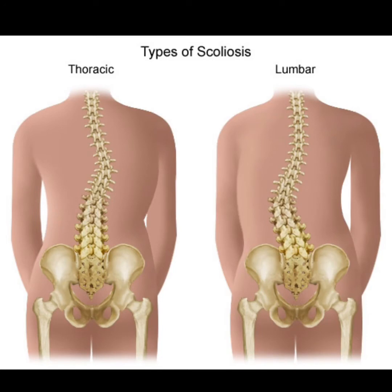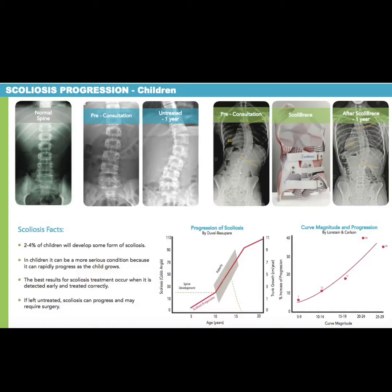Let's start with what scoliosis is. Scoliosis is a curve greater than 10 degrees that also includes rotation of the vertebra. Here we have two pictures showing in simple form a thoracic and a lumbar scoliosis curvature, and we're going to go through how to correct that.